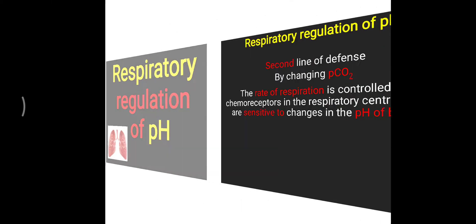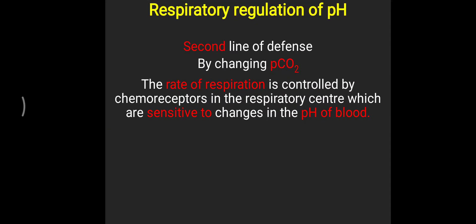Today's topic is about respiratory regulation of pH. Our blood pH ranges from 7.35 to 7.45. This video will look at how the respiratory system regulates blood pH. Respiratory regulation is called the second line of defense. We have already seen that the buffer system of our body works as the first line of defense.